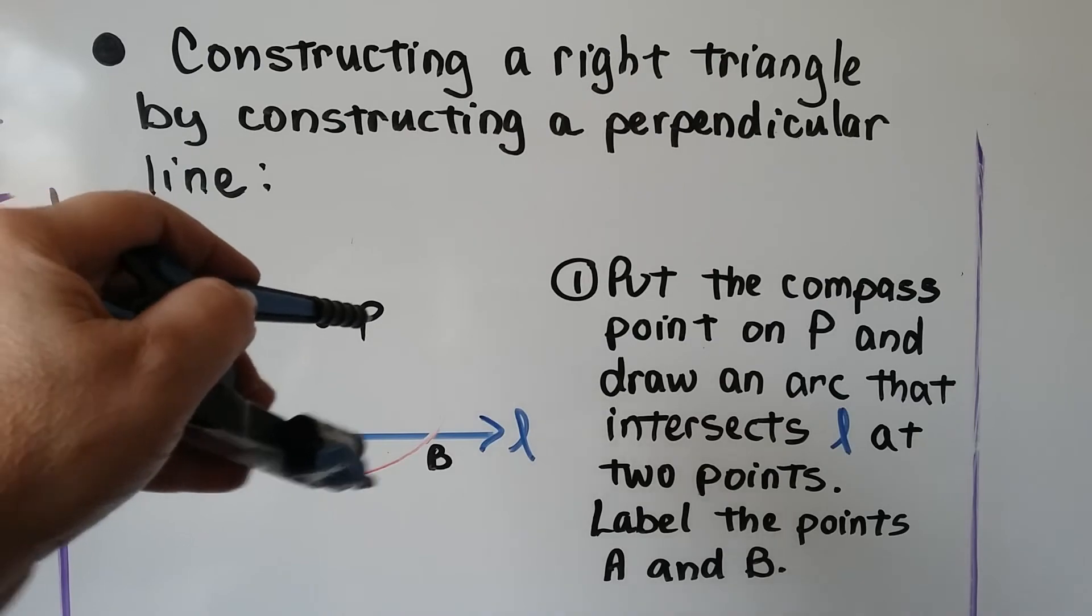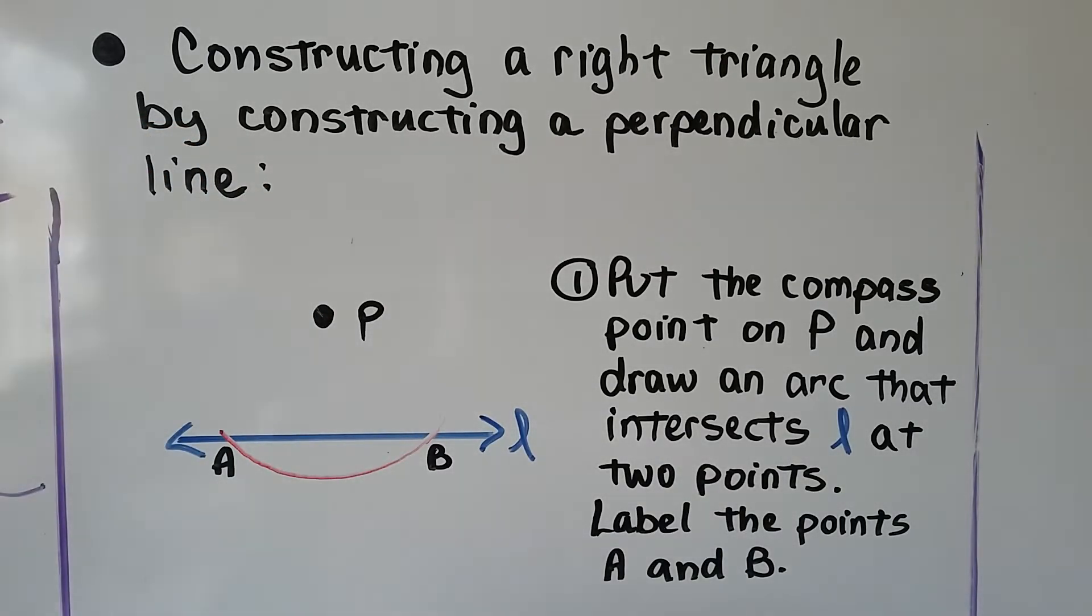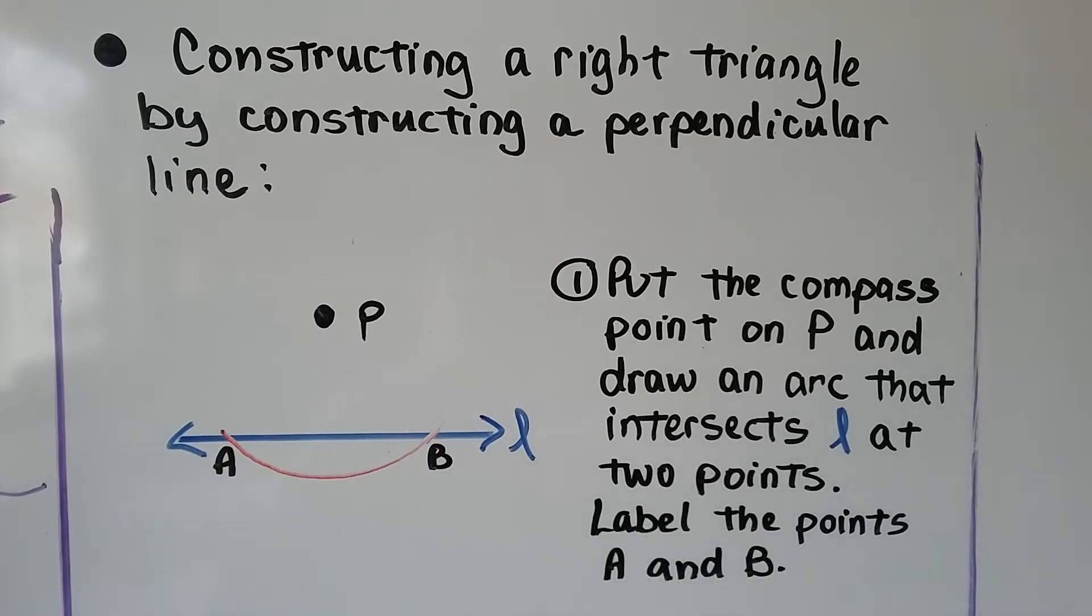like this, and draw an arc that intersects line L at two points. Label them A and B.